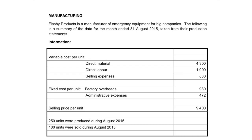Fixed cost per unit remains the same. So whether you produce a thousand articles or 1,100, the rent for the factory will be the same. The depreciation will be the same on the machines, whether you produce a thousand or 1,100. The people who are responsible for the admin duties in the business will get the same salaries, irrespective of how many articles you make.